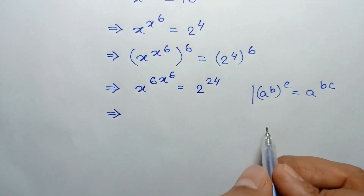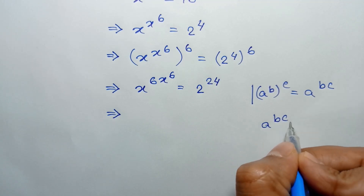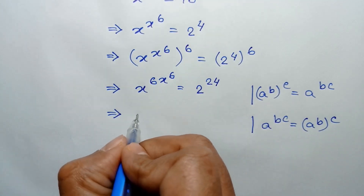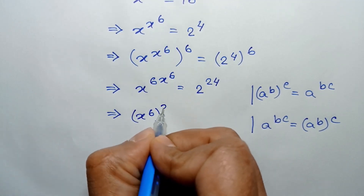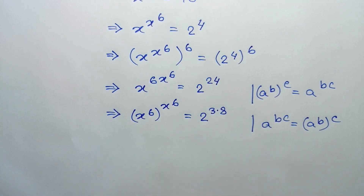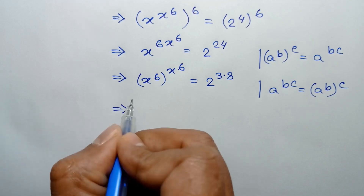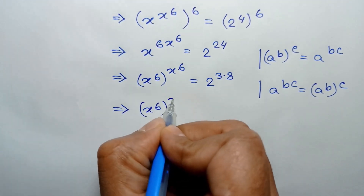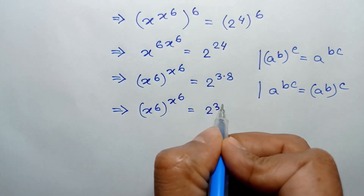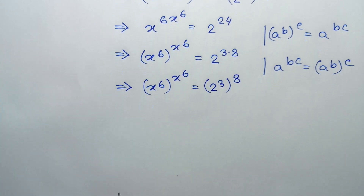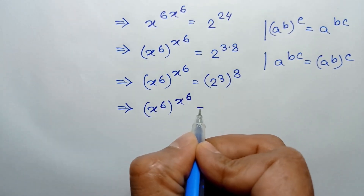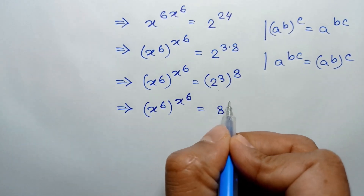According to the reverse of this formula, a to the power bc is equal to a to the power b, whole to the power c, we can write it as x to the power 6, whole to the power x to the power 6, is equal to 2 to the power 24. Since 24 is 3 times 8, this becomes x to the power 6, whole to the power x to the power 6, is equal to 2 to the power 3, whole to the power 8, which is 8 to the power 8.